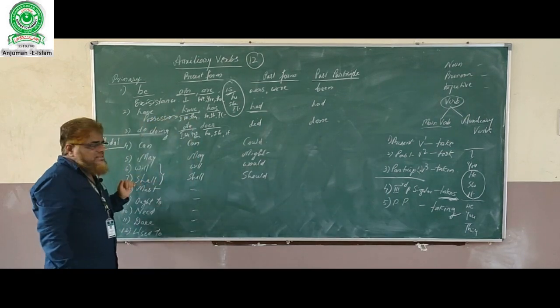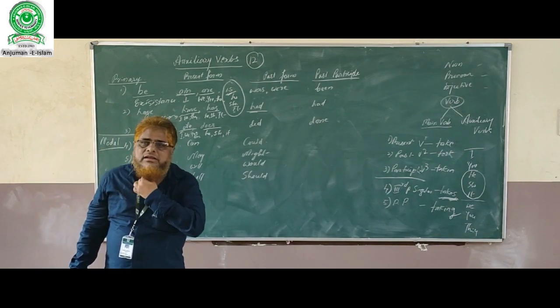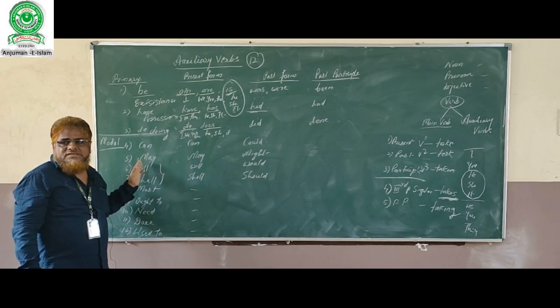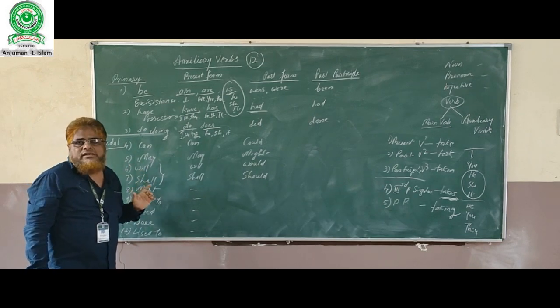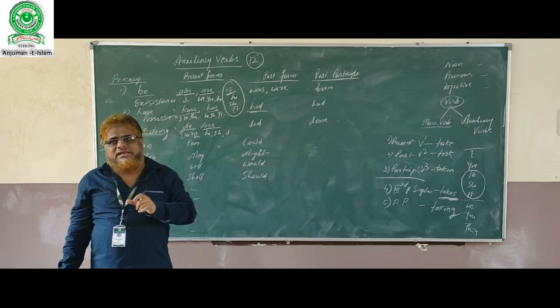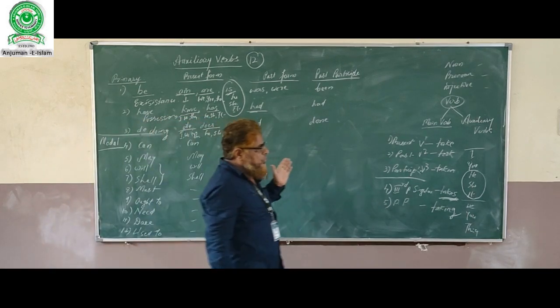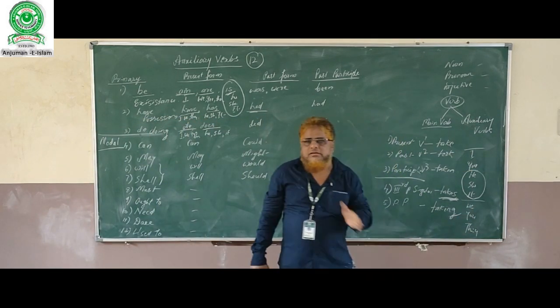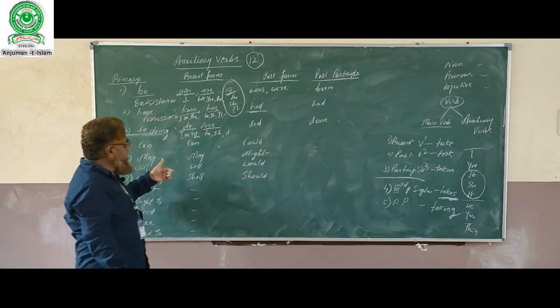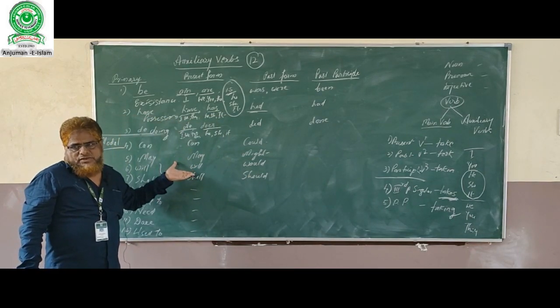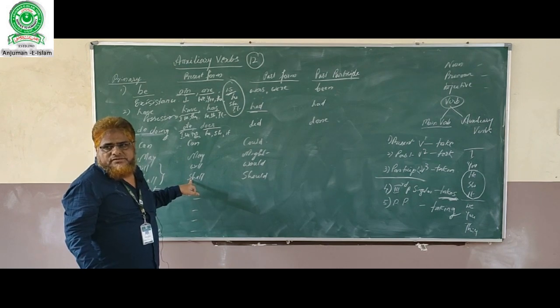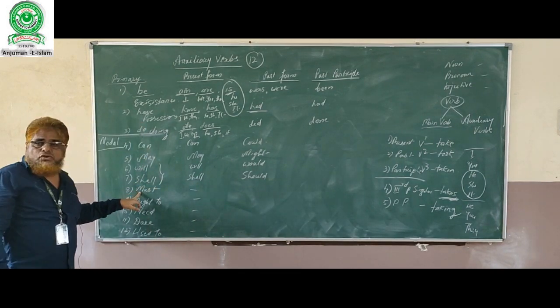Then there is 'may.' May shows possibility or probability. 'Will' and 'shall' express future. 'Will' normally is used for all the pronouns: I will, you will, she will, it will. But previously, compulsively 'shall' was used for first persons—that is, I and we. First person is I and we, singular and plural. Compulsively shall used to be used in the previous time, but today, nowadays, 'will' is commonly used for all the pronouns. But 'shall' is also used for suggestions.